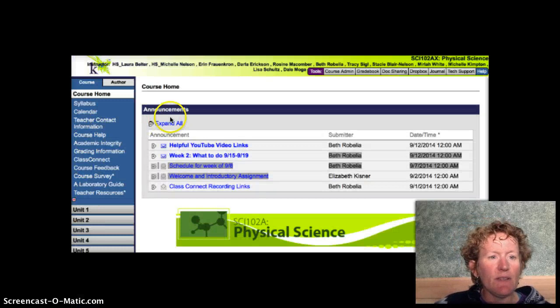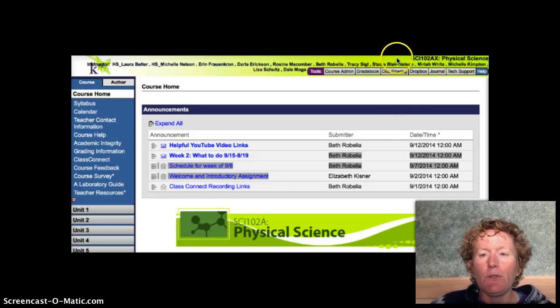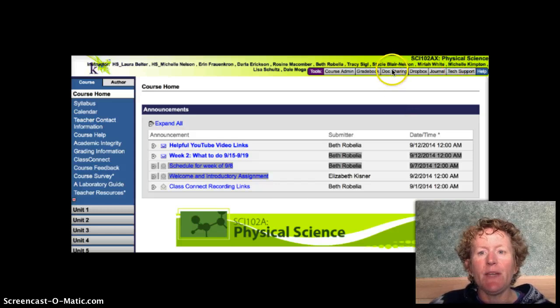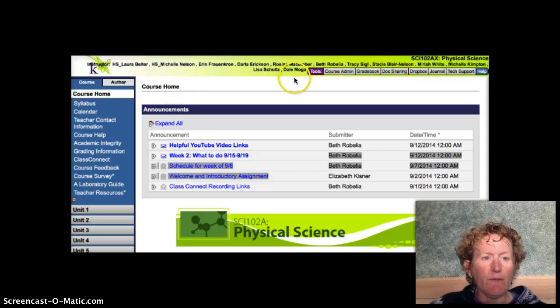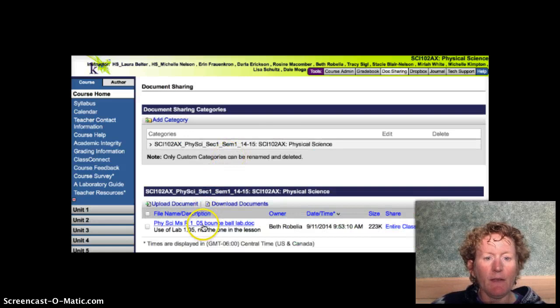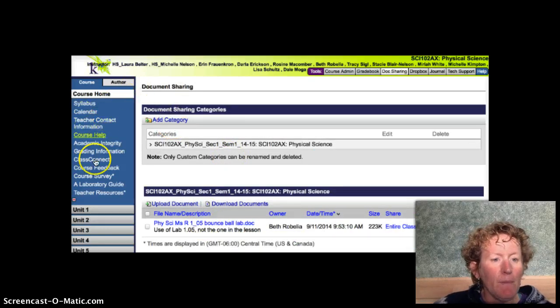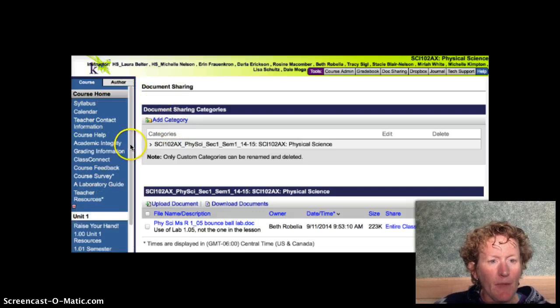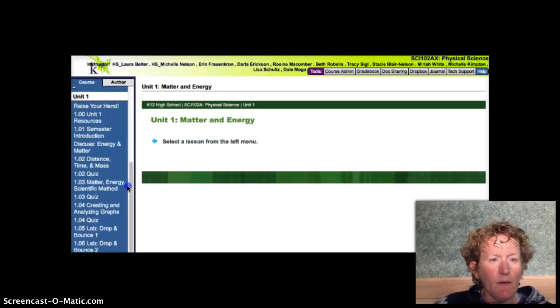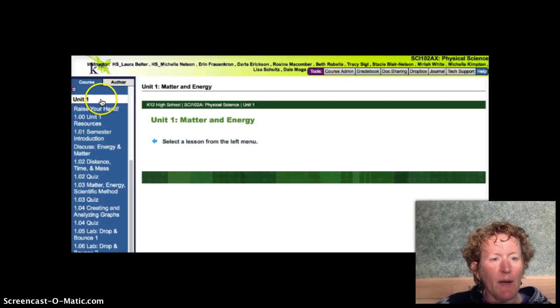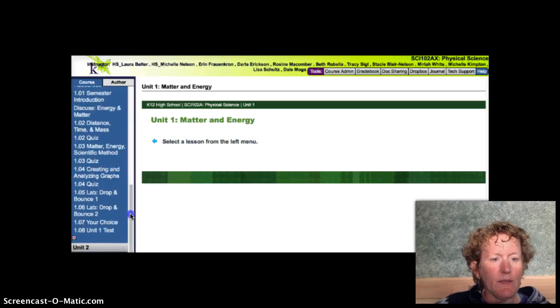So this is the physical science page here. You can see this says physical science up here. You should have downloaded the lab from doc sharing here on the bar. It's lab 1.05. You can just click on doc sharing and click on this, and that'll download your lab sheet. But to get to the actual lab, we can go to unit 1. I clicked on the unit 1 bar. I'm going to go down to the lab here, 1.05. Click on the lab.